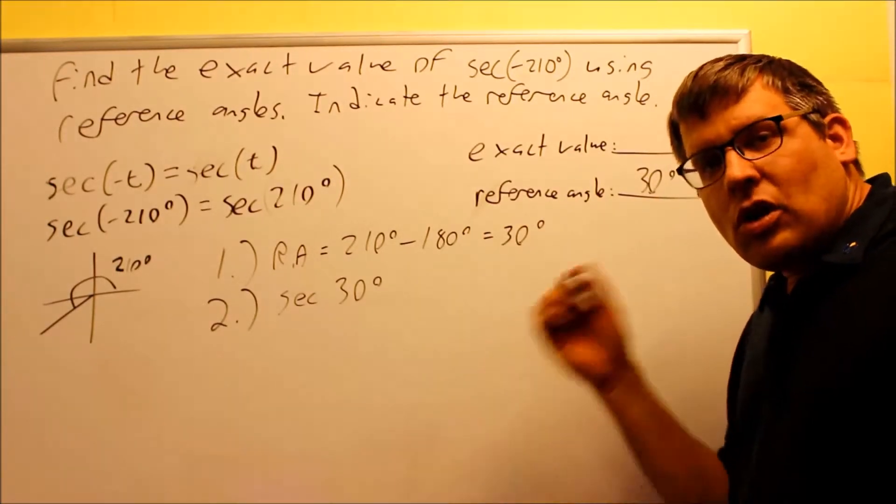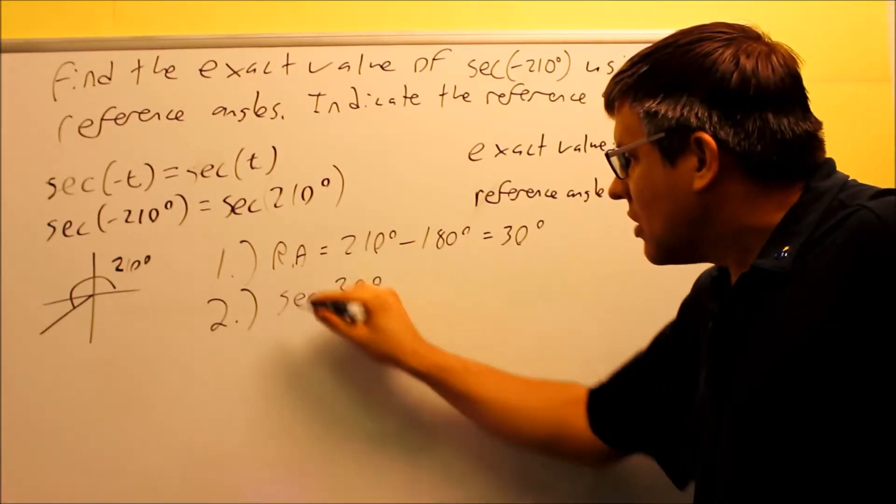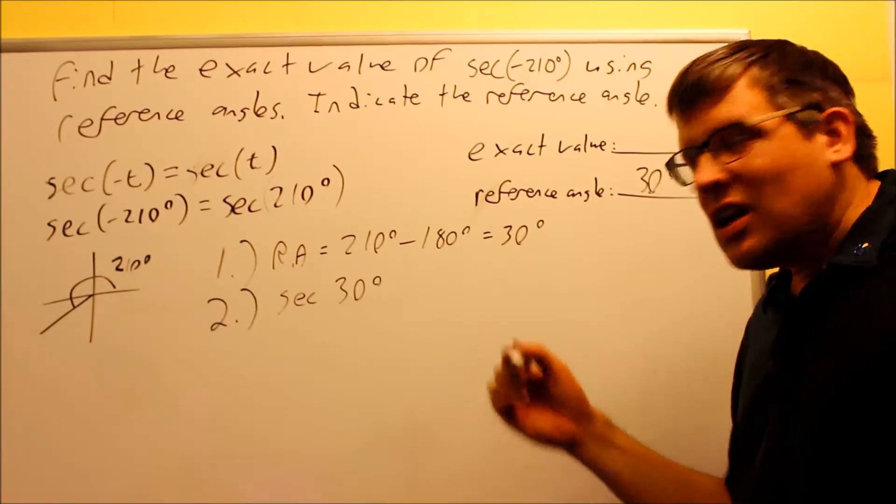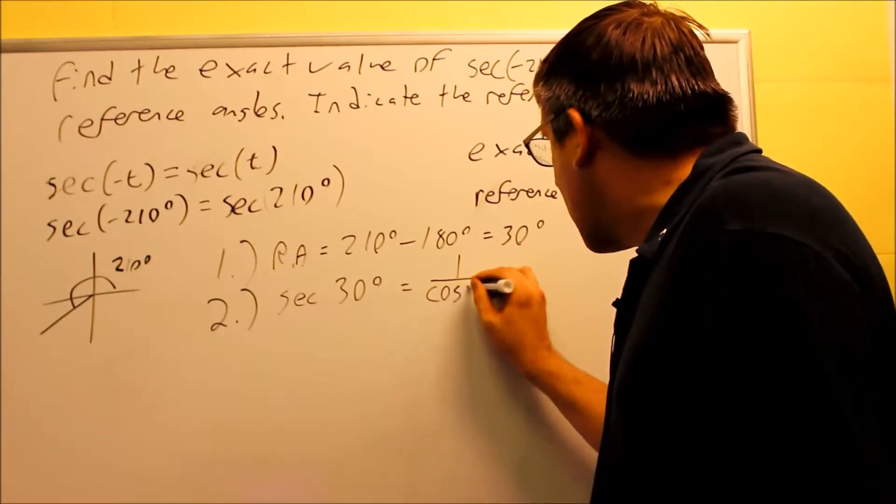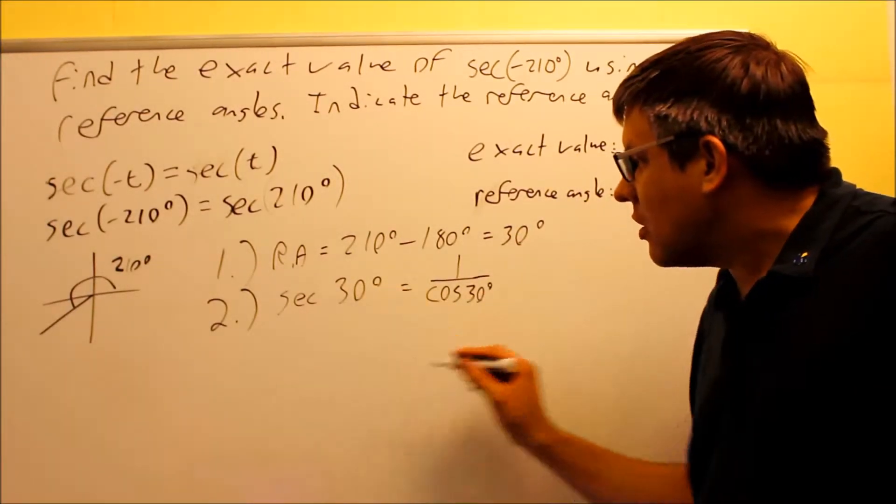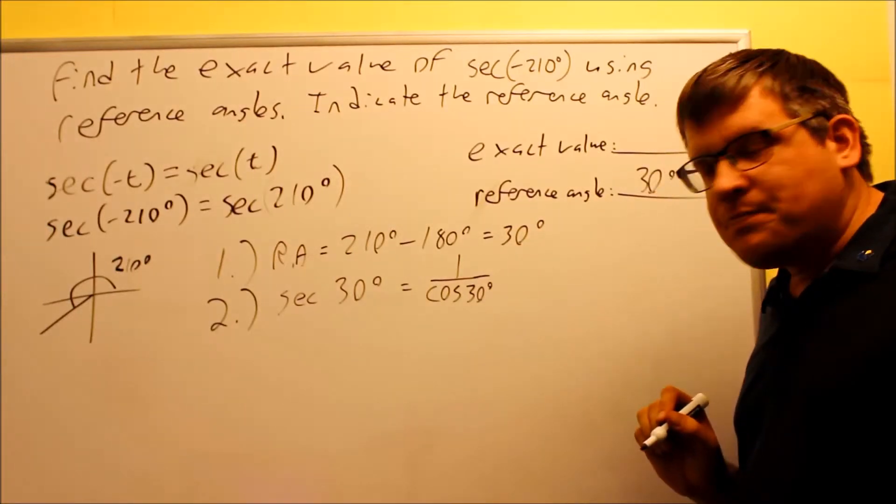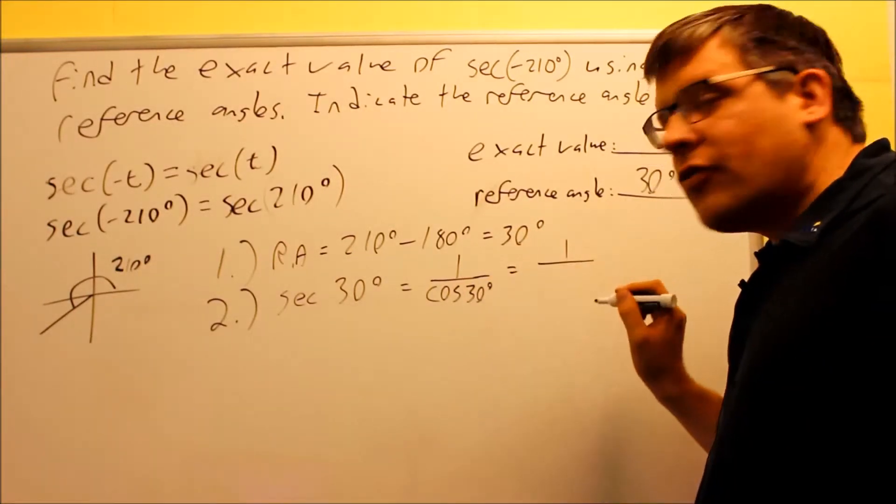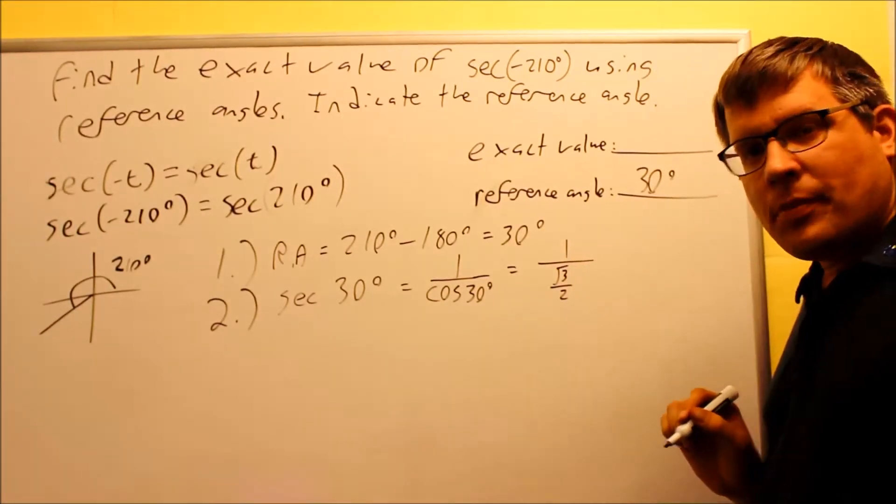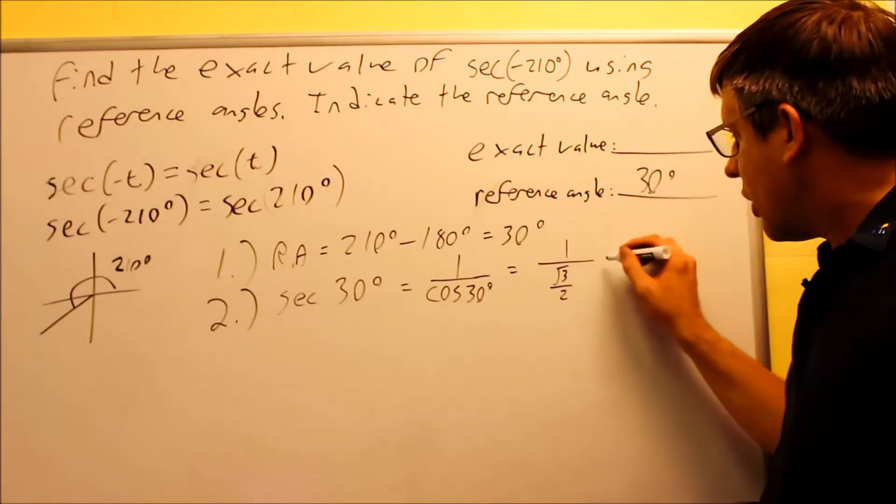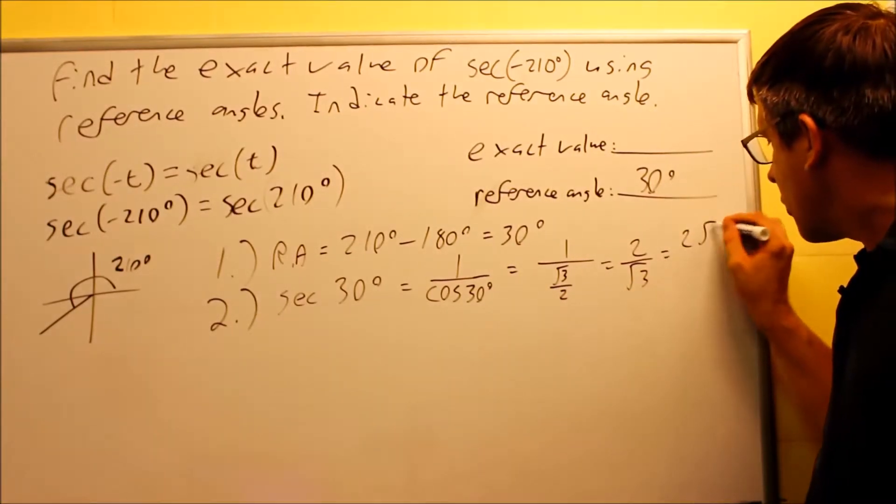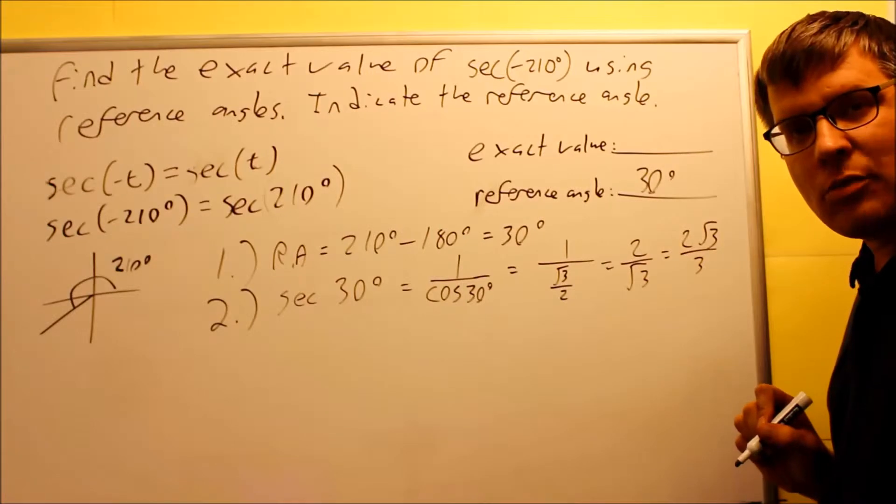Or the other way I can look at that is secant is the same thing as one over x. We talked about that before with unit circles. And that's also the same thing as one over cosine. So I can consider that as one divided by cosine 30 degrees. That's the same way of looking at secant, same thing as one over cosine. And now cosine 30 I can get off of the unit circle. That would be square root of 3 over 2 is the exact value there. And I need to flip this. So when I flip it, I get 2 over square root of 3, but it's always good to rationalize your answer. So therefore, 2 square root of 3 over 3 would be the answer for step number 2.